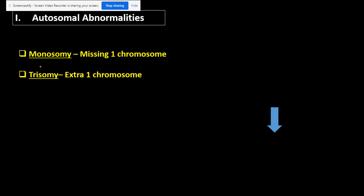First, I want you to know the meaning of monosomy and trisomy. When we have a missing chromosome in the karyotype, we call this monosomy — monosomy means I am missing one chromosome. If I have an extra chromosome in the karyotype, we call this trisomy. So monosomy is for a missing chromosome and trisomy is when I have an extra chromosome.